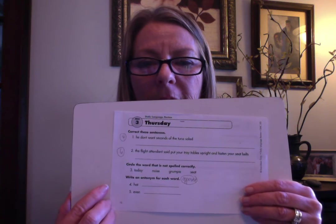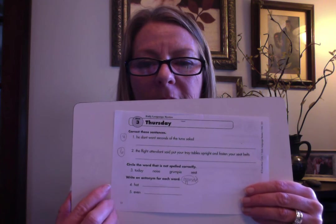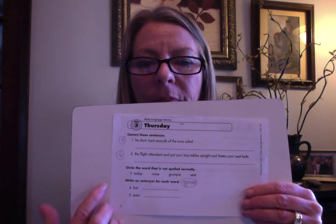And then you're going to circle the word that is not spelled correctly — there's just one group of words, one word that's not spelled correctly. And then you want to write an antonym. Remember, synonyms mean the same — antonyms mean opposites. So write an opposite for each of those.